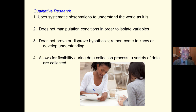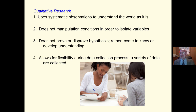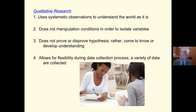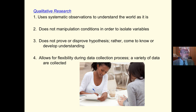Qualitative research uses systematic observation, but it is used to understand the world as it is, not to set up artificial worlds. It does not manipulate conditions in order to isolate variables, and it does not try to prove or disprove a hypothesis — rather, the goal is to come to an understanding. It allows for flexibility during the data collection process, and a variety of data are collected. In quantitative research you are very specific and only look for one thing, whereas qualitative research allows for a broader view.